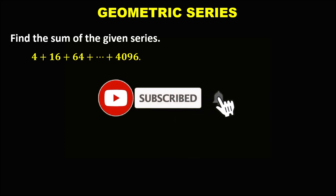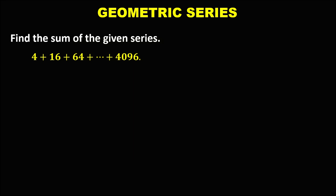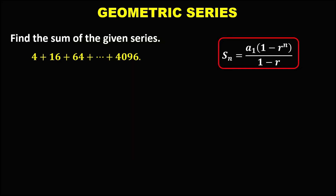So let's solve this problem. To find the sum of the given geometric series, and this is the formula for the sum of a geometric series. From the given, we have the first term, that's positive 4.